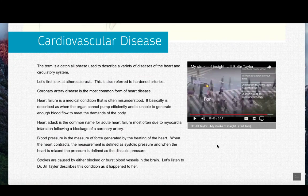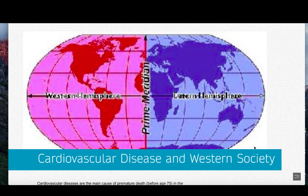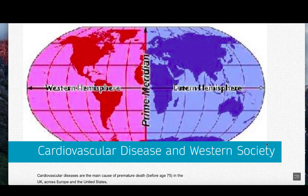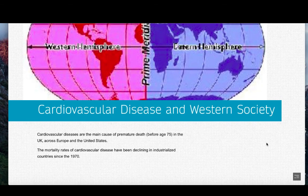That was quite an interesting video, told through the voice of somebody who has experienced a stroke firsthand. Cardiovascular diseases are the main cause of premature death — that is, death before the age of 75 — in the United Kingdom, across Europe, and in the United States. What is startling is that three quarters of the deaths worldwide took place in low and middle income countries. The mortality rates of cardiovascular diseases have been declining in industrialized countries since the 1970s.